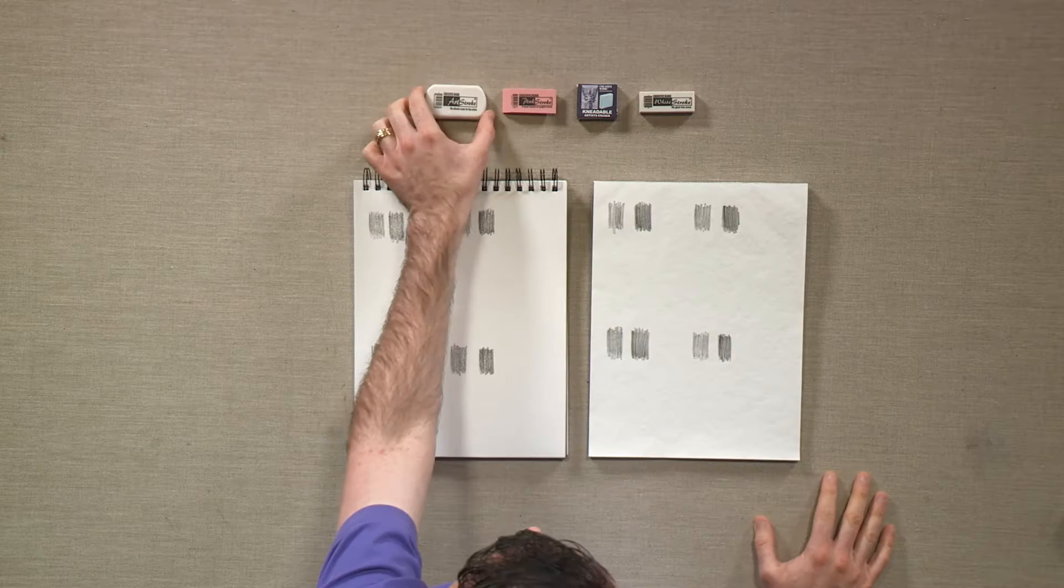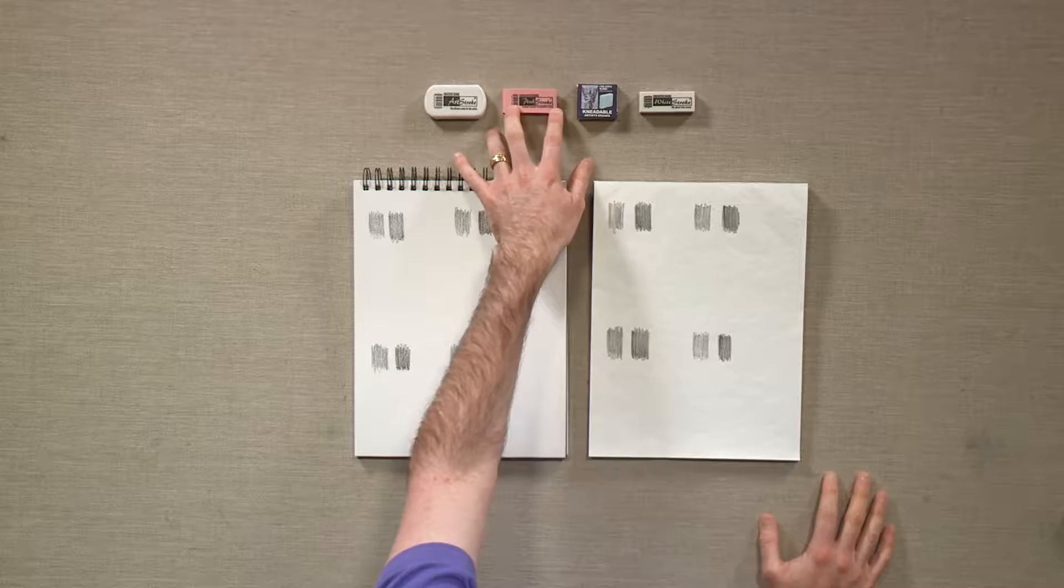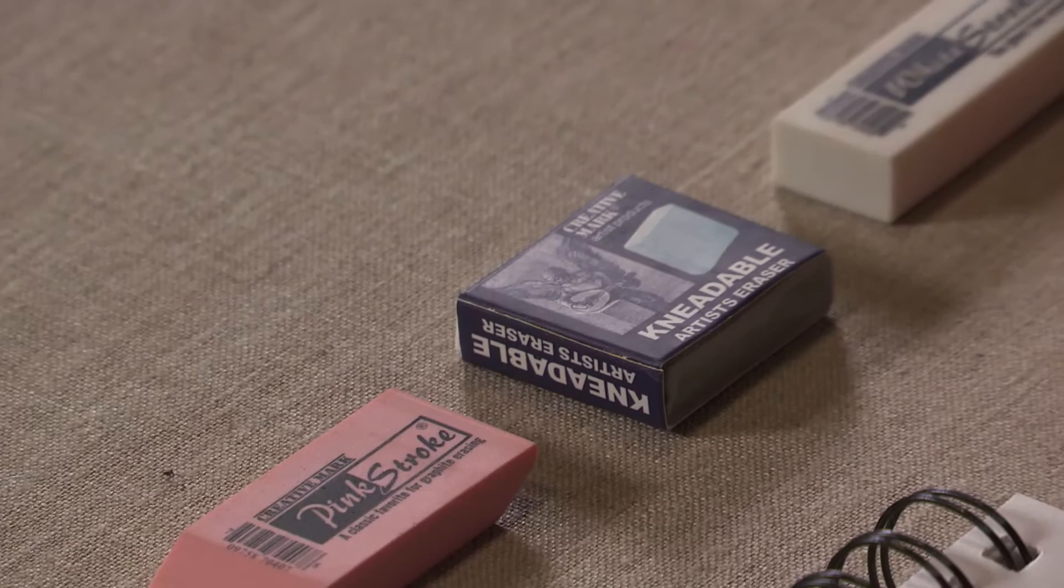Creative Mark has a lineup of erasers that you may or may not be familiar with. They are fairly traditional. We've got an art stroke eraser, which is kind of the egg-shaped vinyl eraser. We've got our pink stroke eraser, which is your classic pink rubber eraser, a kneadable eraser, and our white stroke, which is a white vinyl eraser.